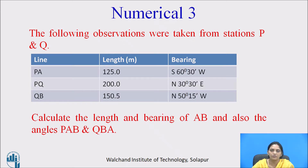In this session, we are going to solve the 3rd numerical. The following observations were taken from station P and Q. Line PA is of length 125 meters and the bearing is 60 degree 30 minutes — it is in quadrant south-west. Line PQ is of length 200 meters and the bearing is north 30 degree 30 minutes east. Line QB is of length 150.5 meters and the bearing of line QB is 50 degree 15 minutes and it is in quadrant north-west.